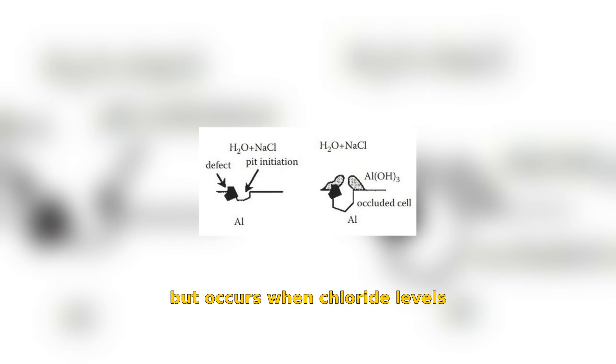Pitting corrosion is similar to crevice corrosion, but occurs when chloride levels are low and the alloy is above the pitting potential. This leads to localized corrosion that can be very damaging.